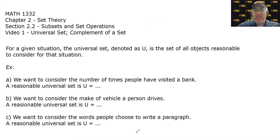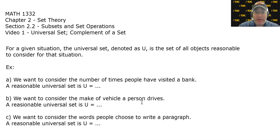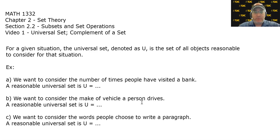We also talked about the empty set — the set that contains no elements — and the cardinality of a set, which is the same as the number of elements in a set. We talked about finite and infinite sets, equal and equivalent sets, and some special sets of numbers: the natural numbers, the whole numbers, the integers, the rational numbers, and the real numbers.